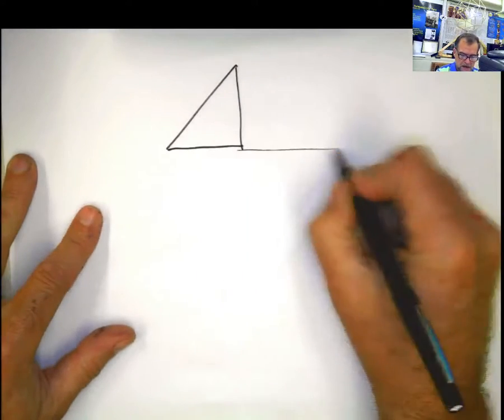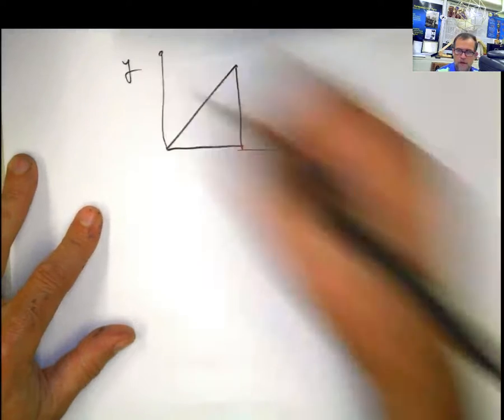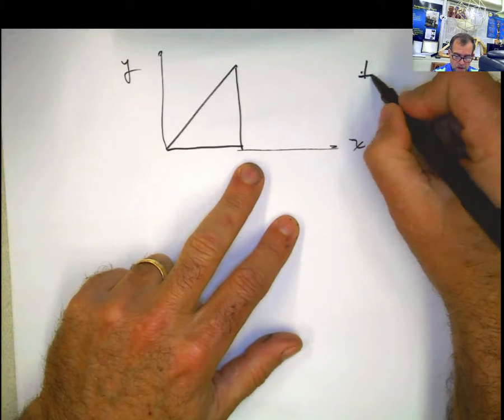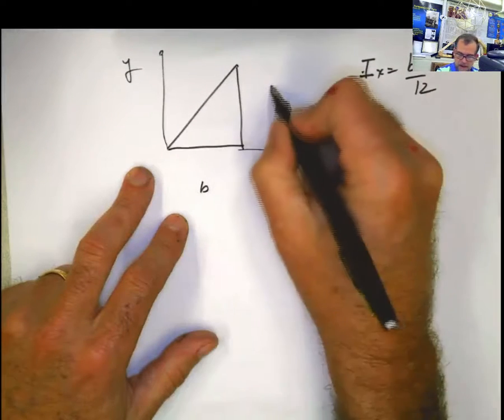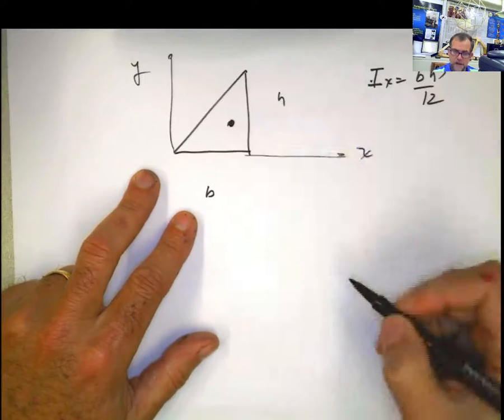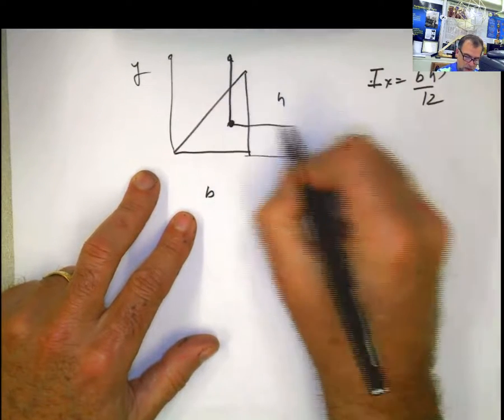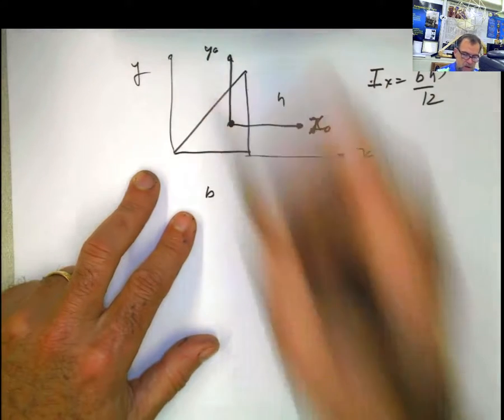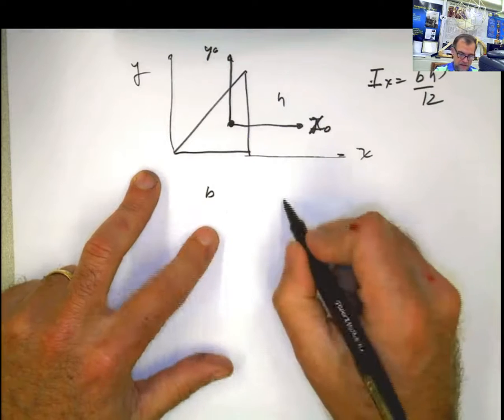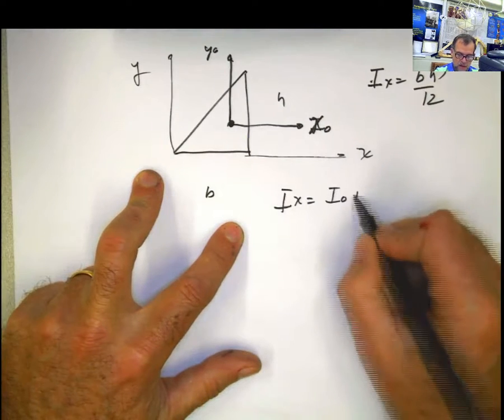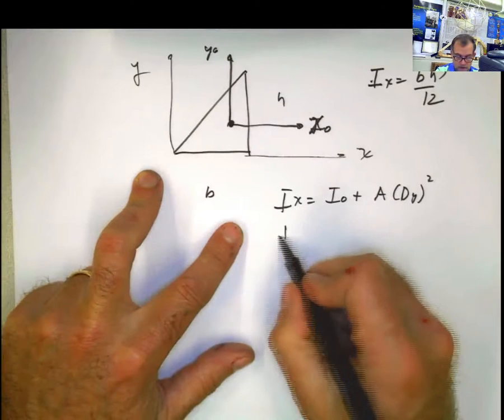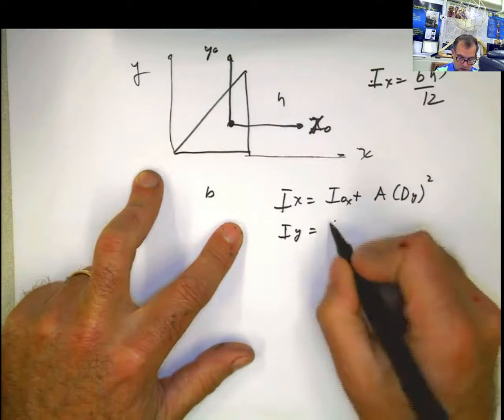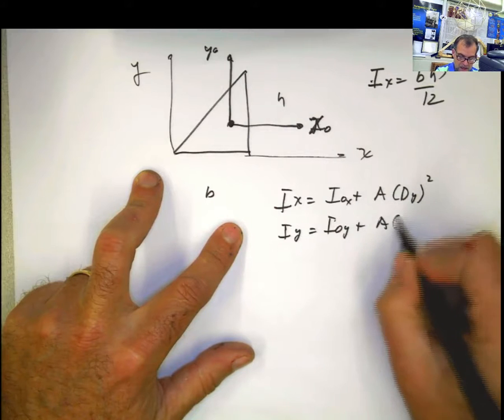If I want to calculate the moment of inertia of the triangle with respect to the centroid and I know this one, it becomes extremely easier than what we did before. We're going to apply the parallel axis theorem. I have x and y, and the moment of inertia with respect to x is bh cubed divided by 12. But I need the moment of inertia with respect to the centroid.